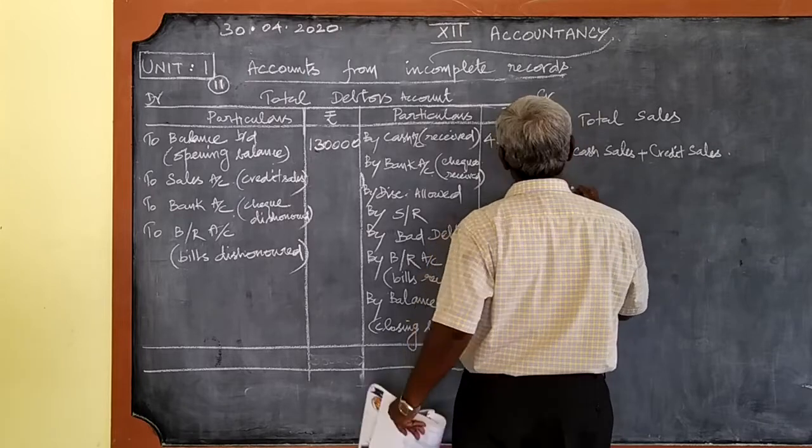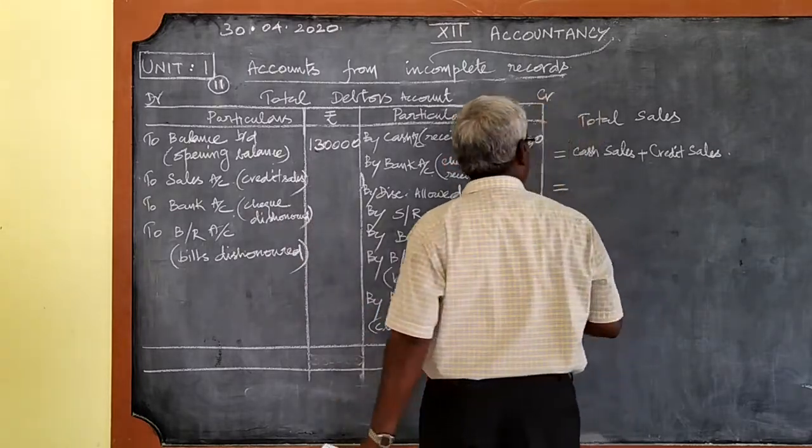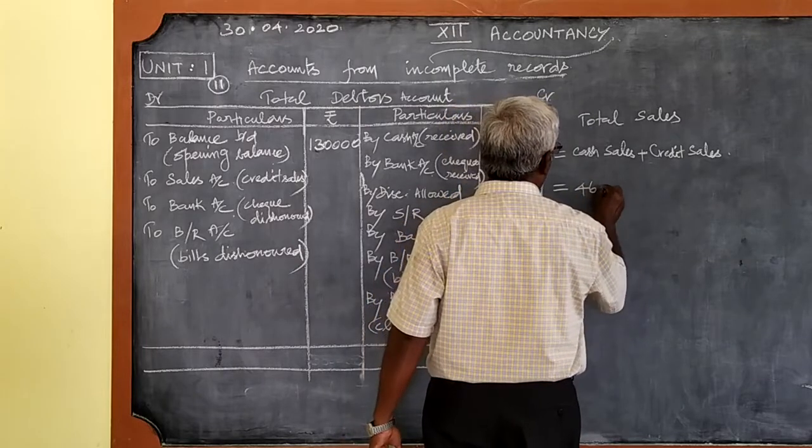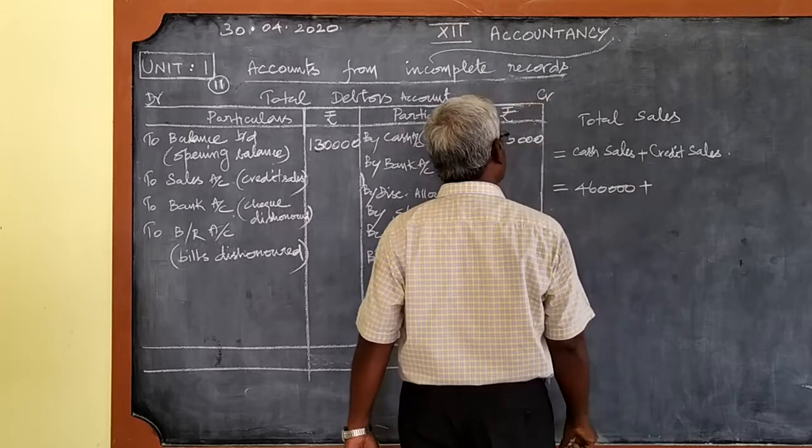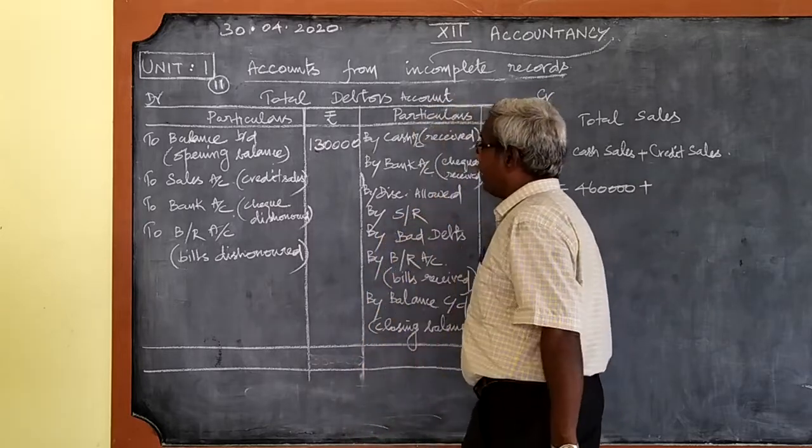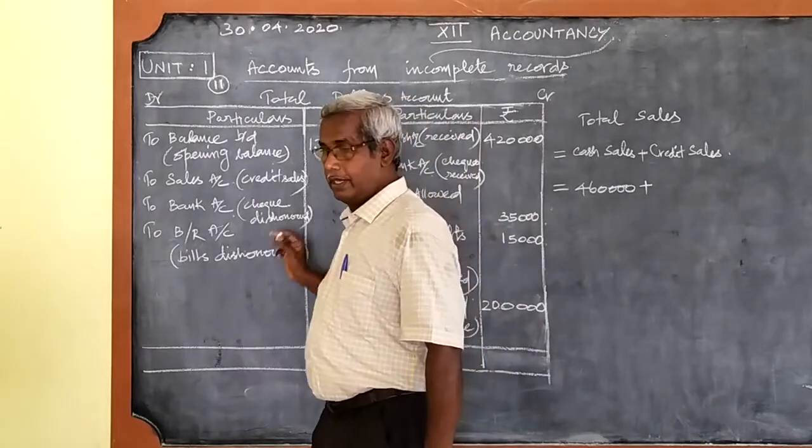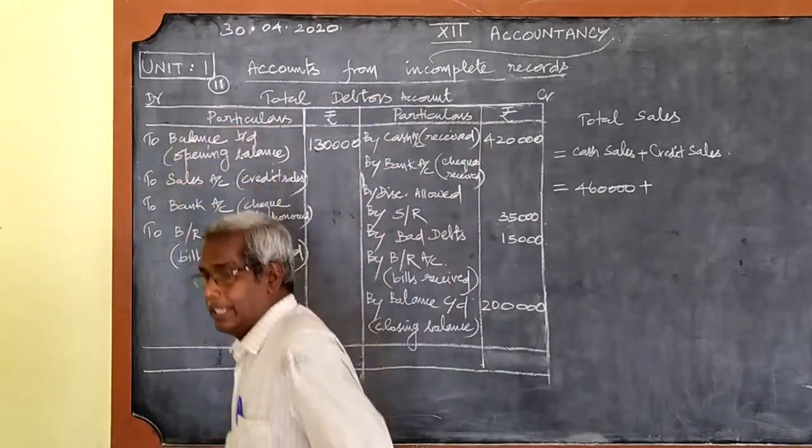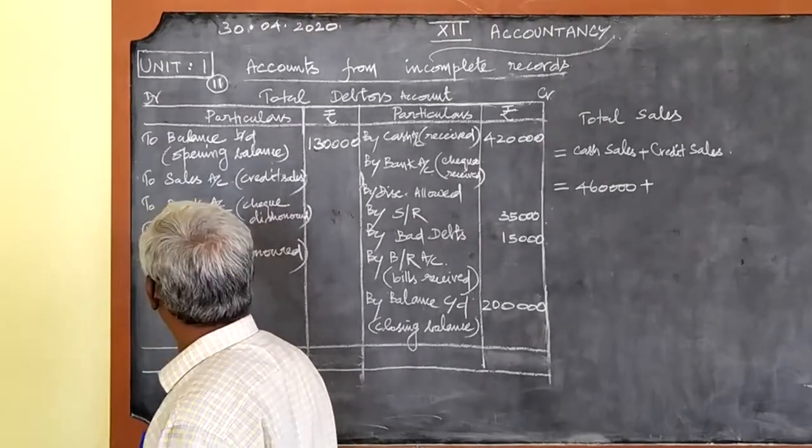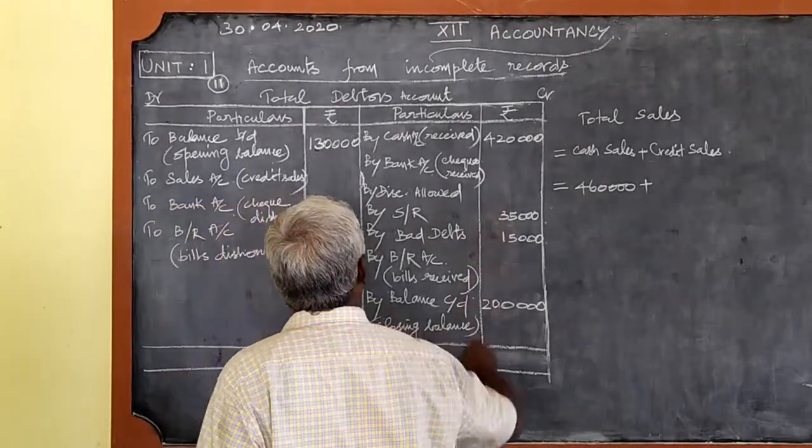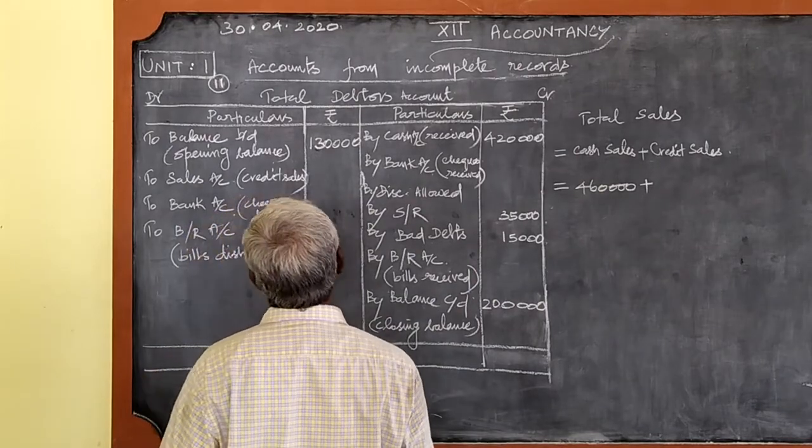Cash sales given here in the format 4 lakhs 60,000, but credit sales not given. What we are going to find from this format, that is why we have written the format. Find the credit sales from the format, write it there, then you can find the total sales of the business.